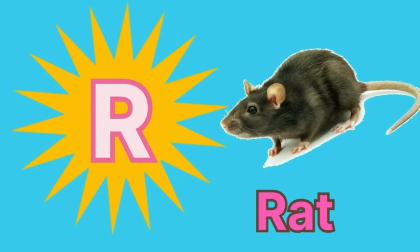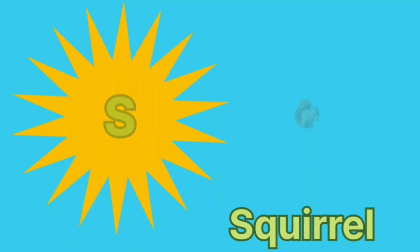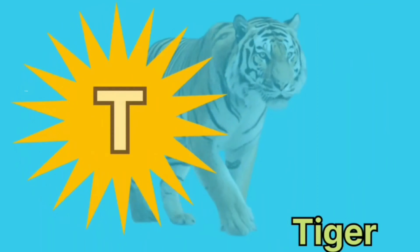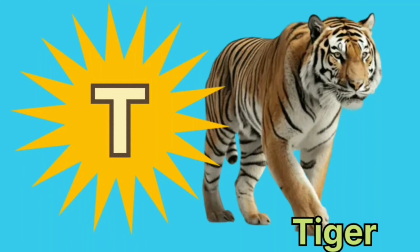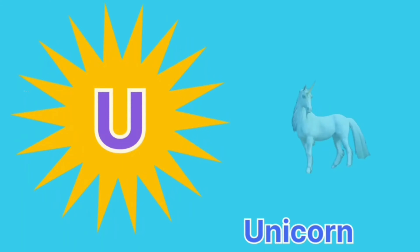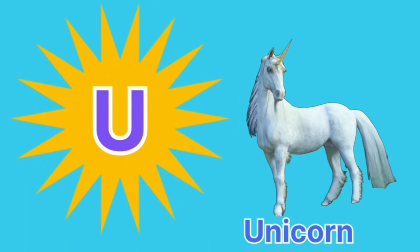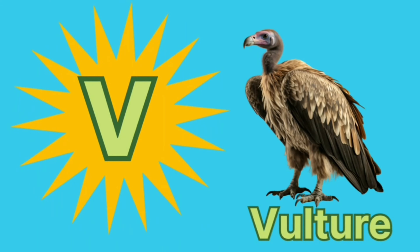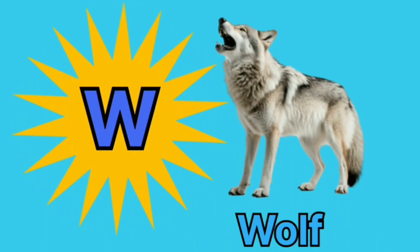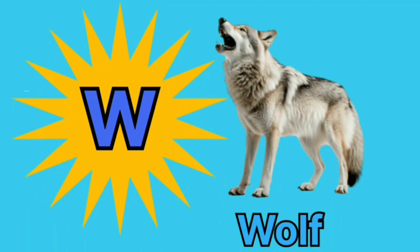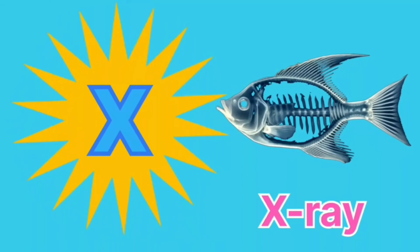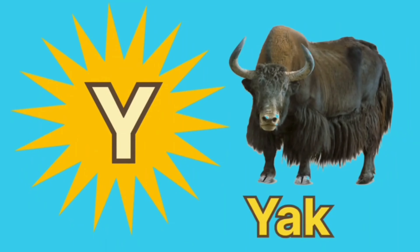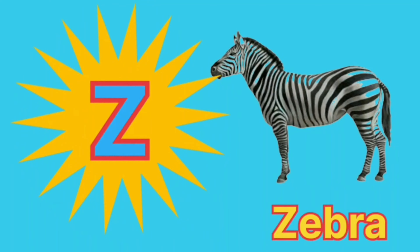S for squirrel, T for tiger, U for unicorn, V for vulture, W for wolf, X for x-ray fish, Y for yak, Z for zebra.